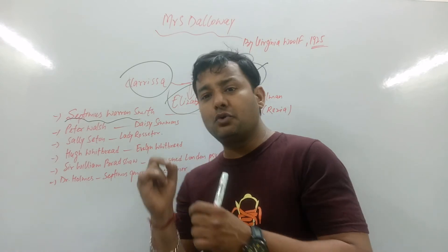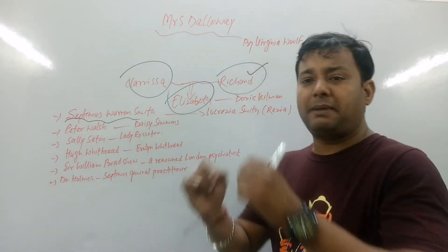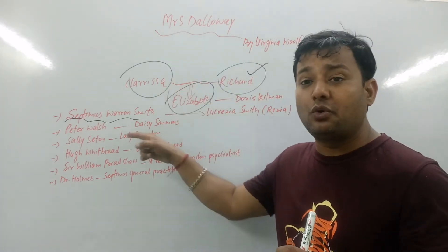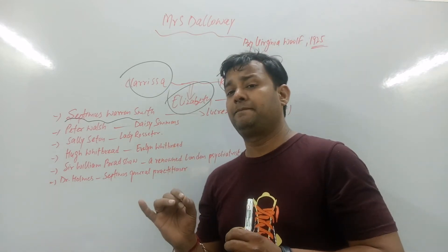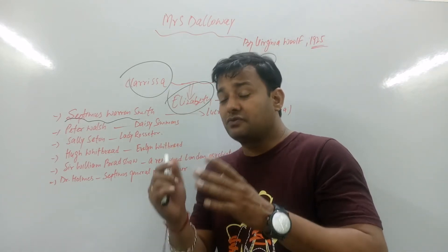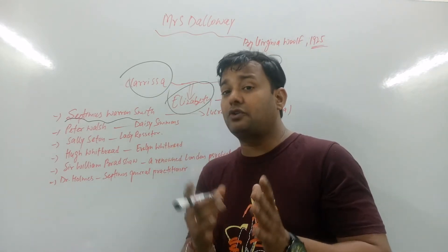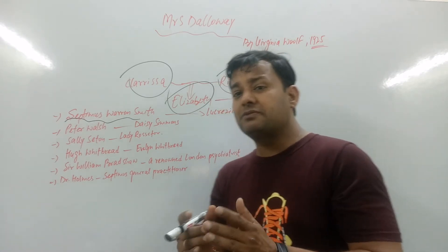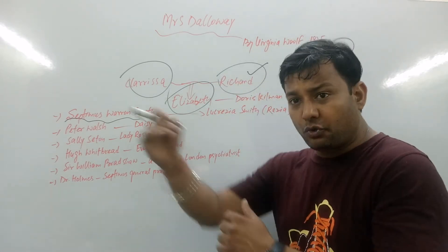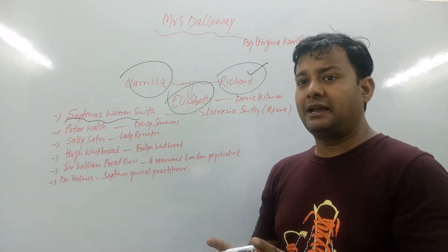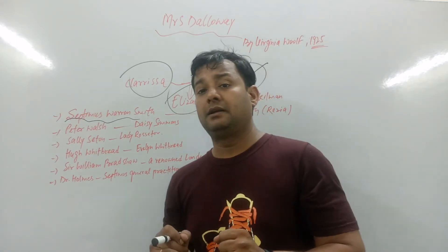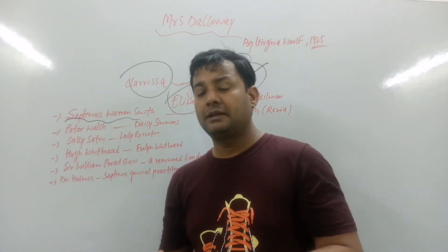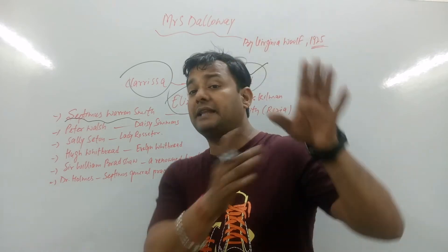When Septimus commits suicide, it doesn't immediately affect the party. But Clarissa somehow gets the news. She quietly slips away to a separate room to process it — stepping back from her role as the host of the party. That all happened in the evening of that same night.